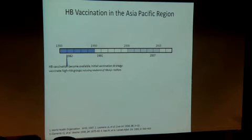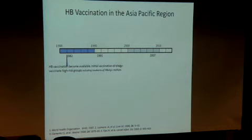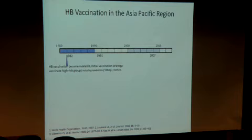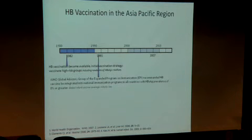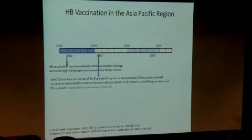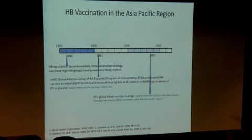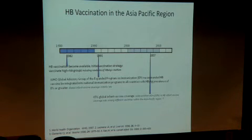Looking at the Asia-Pacific region and Singapore: in 1982, Hepatitis B vaccination became available. Between 1982 and 1985, many studies were done. In 1985–1986, Singapore introduced hepatitis vaccination for mothers who are E-antigen positive. In 1991, the WHO suggested the expanded program on immunization in childhood. However, it took nearly 20 years to reach only 65% of global infant vaccine coverage — not 100%.